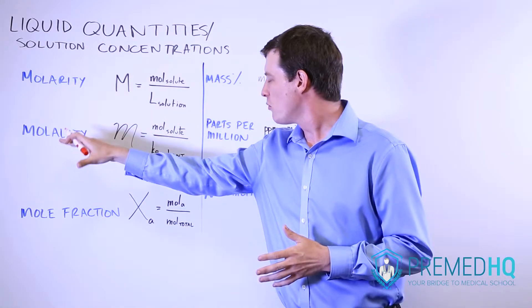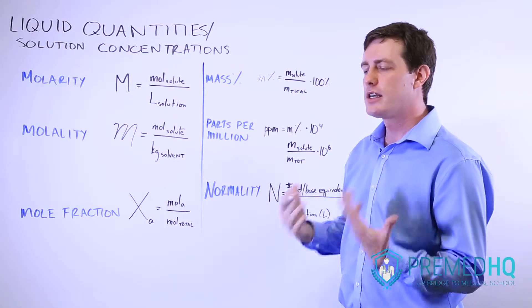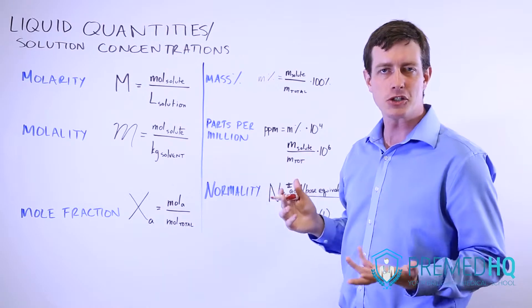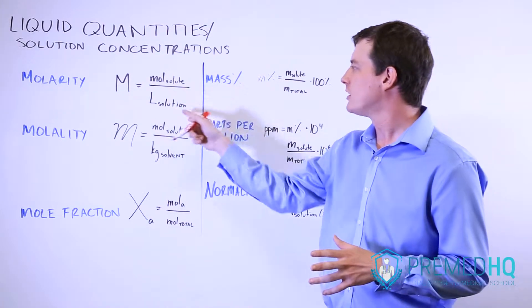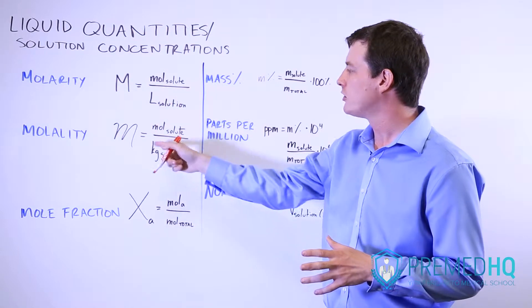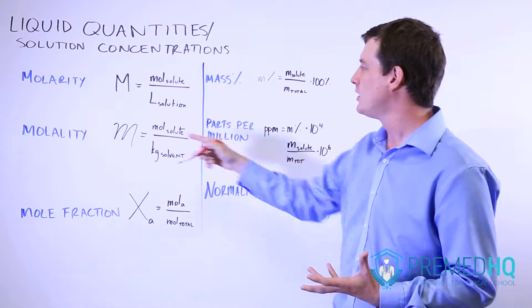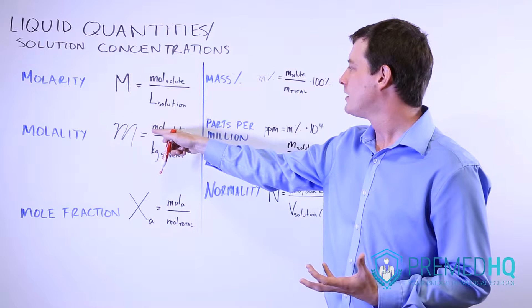Molality is somewhat similar but it uses a different scale and it's useful a lot of the times because it can be produced in a lab using different measurements. A lot of times when you're working in a lab you may not want to measure out a liter of solution, but rather you're looking at how many kilograms of solvent you have.